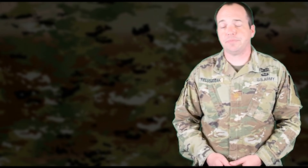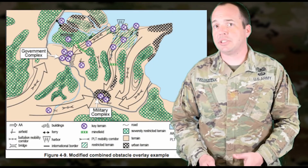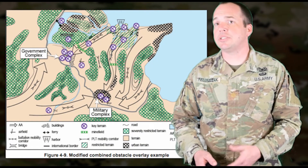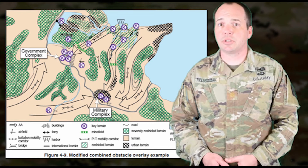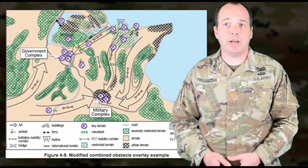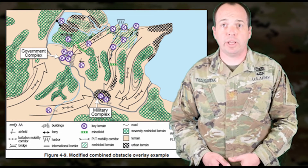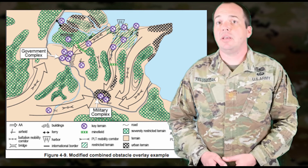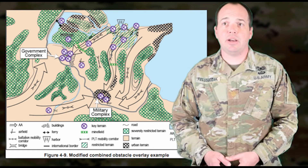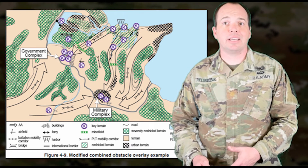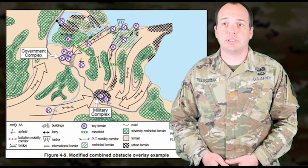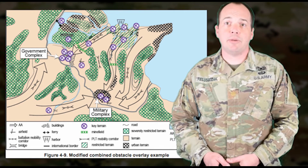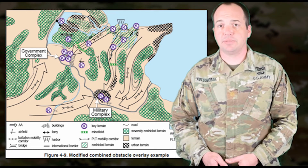If your threat has similar capabilities, it is recommended that you conduct that same type of analysis for future COA threat analysis. The combination of all separate terrain analysis products into a single presentation or collective is known as the Modified Combined Obstacle Overlay, or the MCOO. This overlay combines the entire staff effort into a single product that can easily be added to other staff section estimates and serves as a rapid reference guide for the intelligence section.